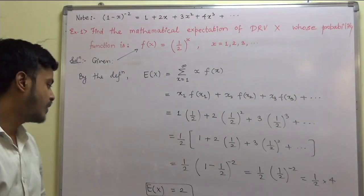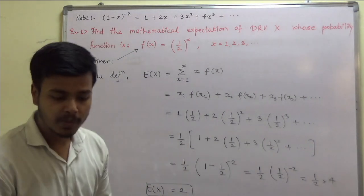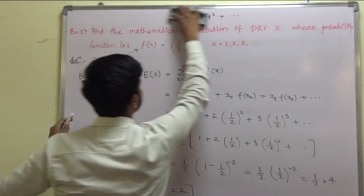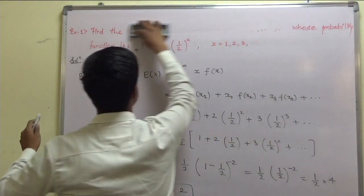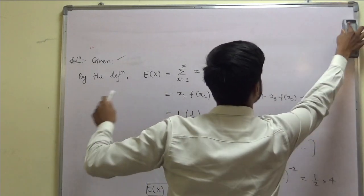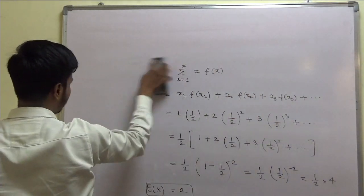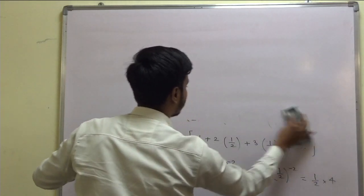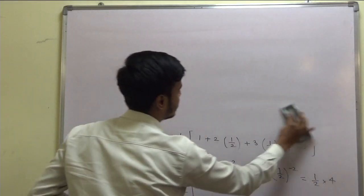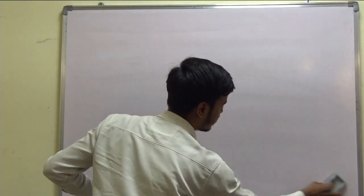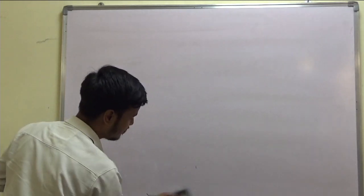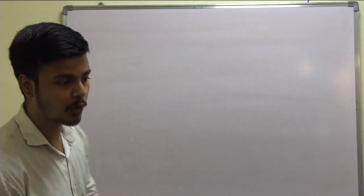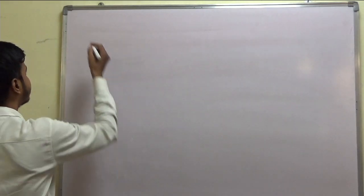Now we can take one more problem on this — a bigger but easy one. Let me write down that lengthy but easy problem. You just need to remember whether to use summation, and whether the problem is of discrete random variable or continuous random variable.